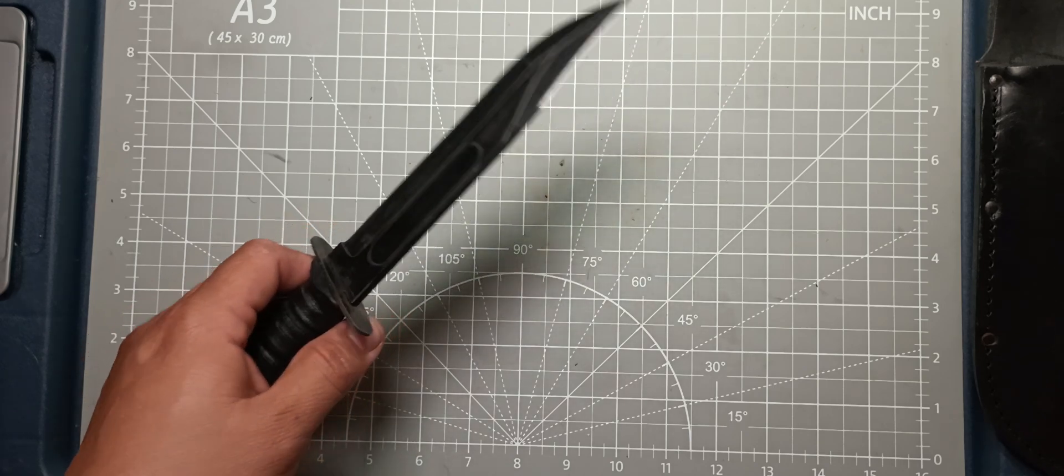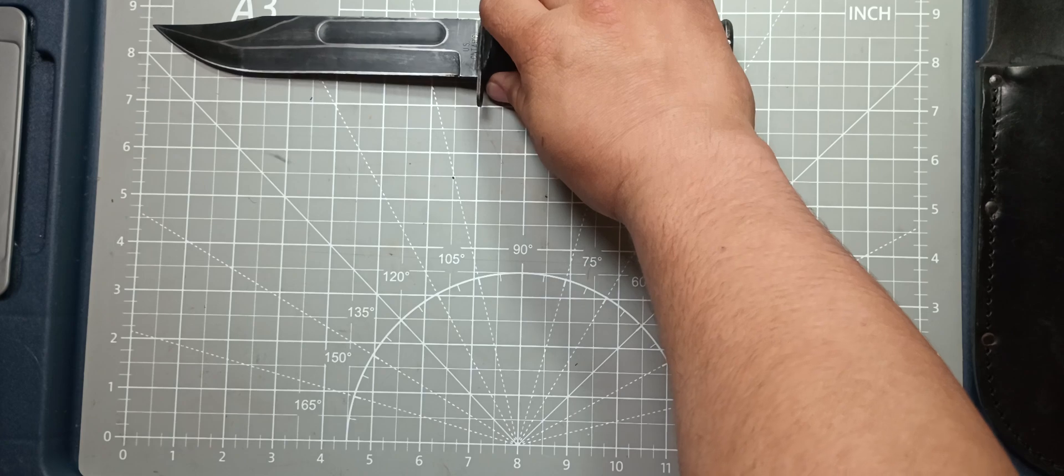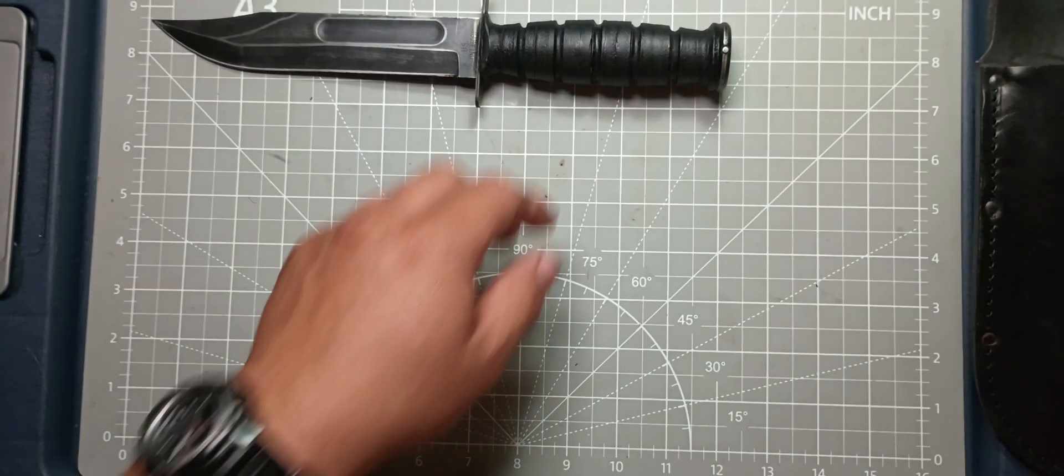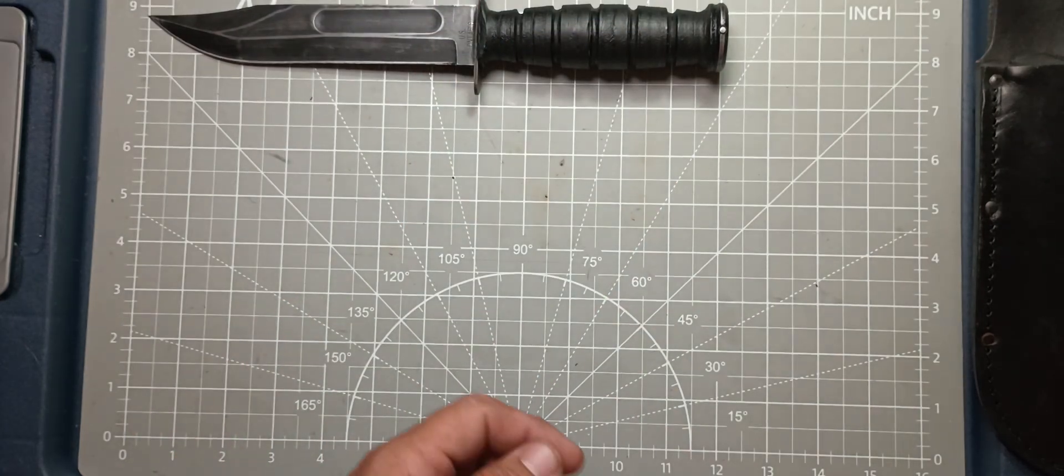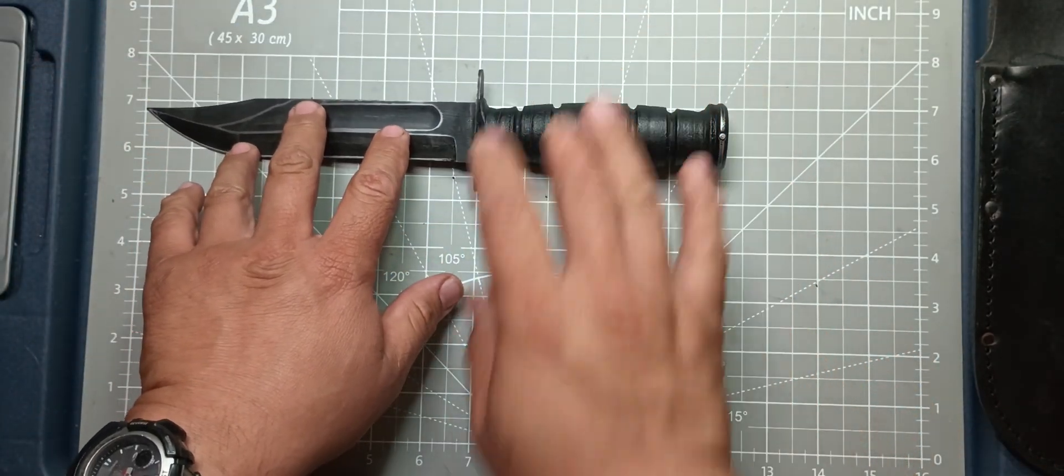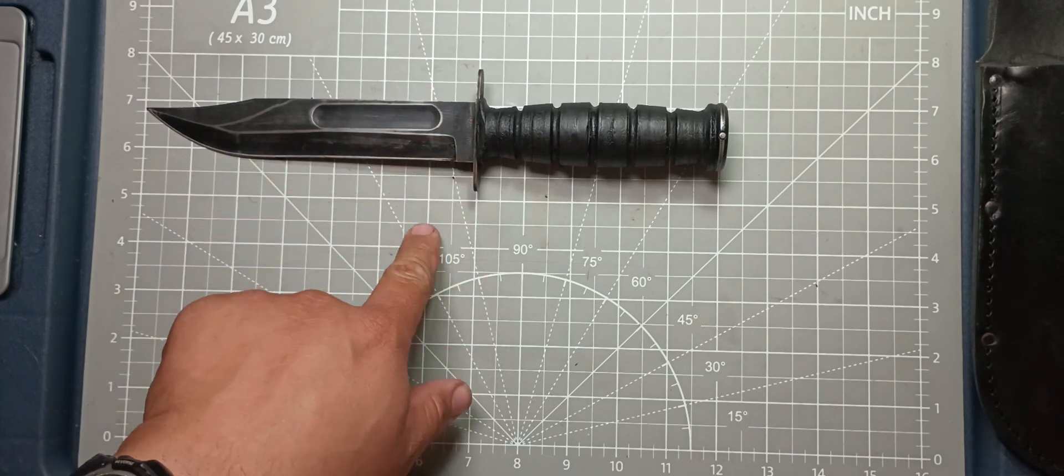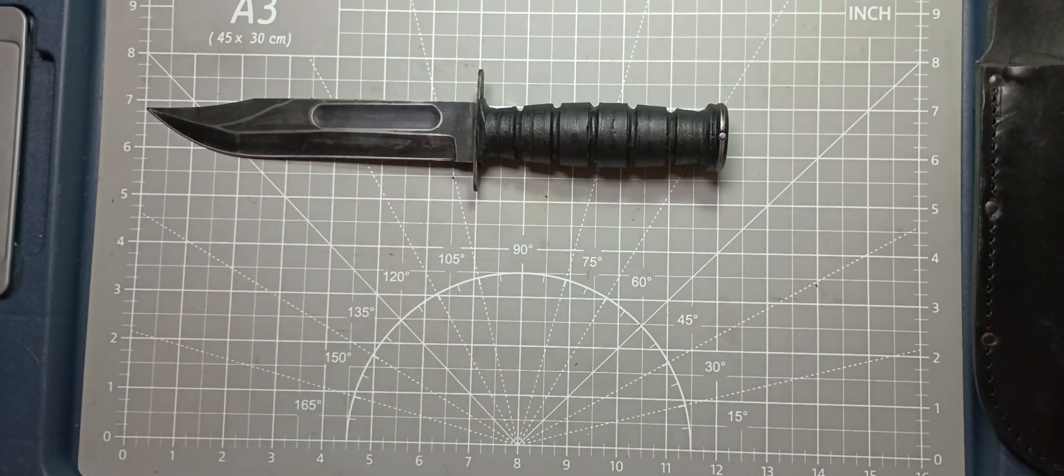Let's give it a quick measure. 12 inches overall length on this one. 12 inches with a seven inch blade and a six and a half inch cutting surface.